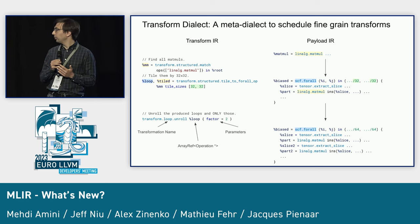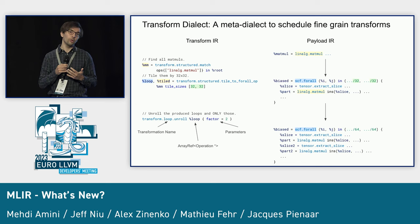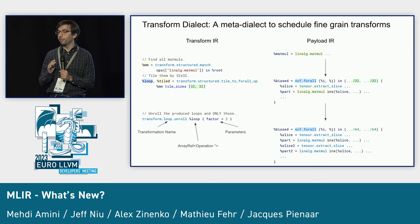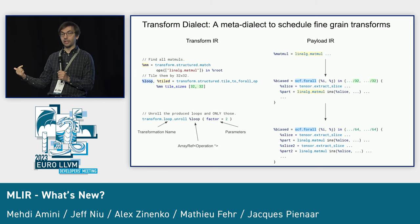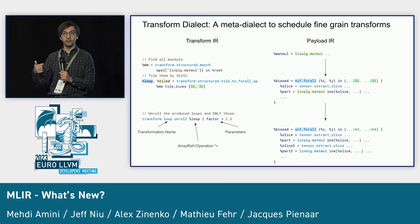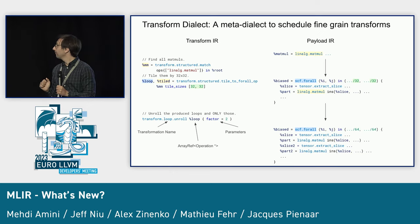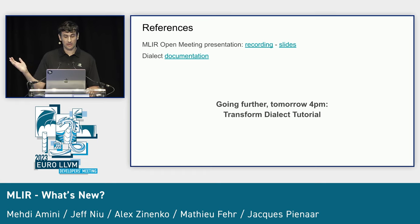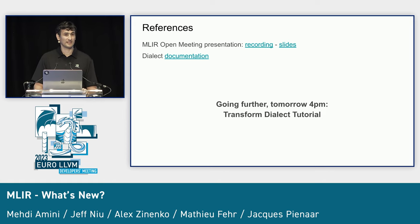In MLIR, everything is a dialect, so schedules are also a dialect — the transform dialect. A schedule DSL compiles down to this dialect and then the MLIR infrastructure manages the application. A simple example: you match a matrix multiplication operation in the IR, get an IR object pointing to it, and then have IR operations that explain to the compiler what to do — for example, tile it by introducing a loop. Alex gave a full presentation at an MLIR open meeting, and is giving a full tutorial on the transform dialect tomorrow at 4pm.